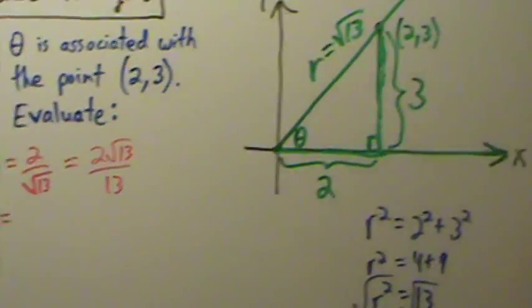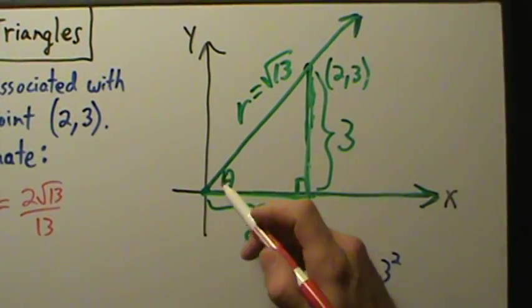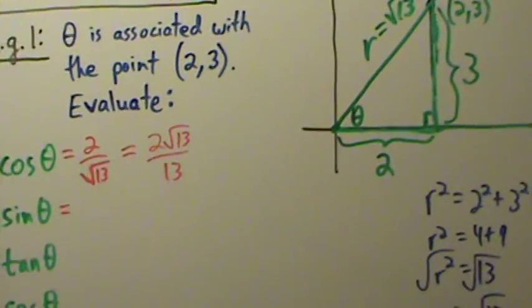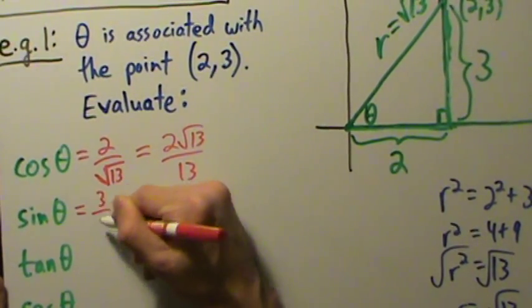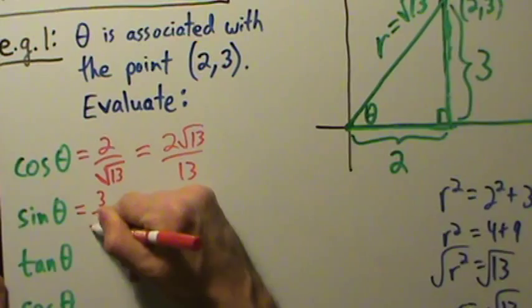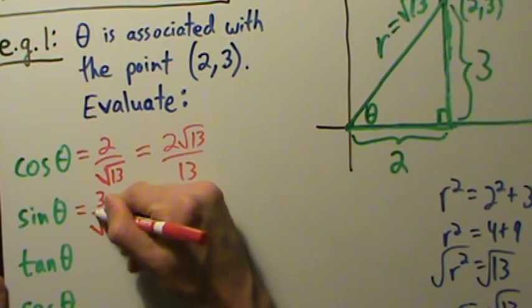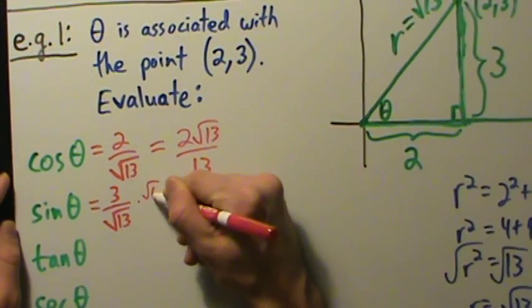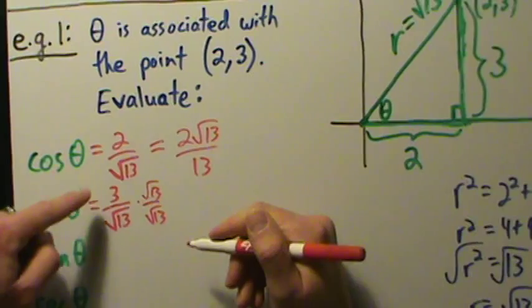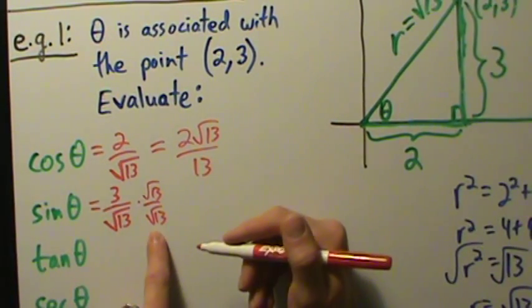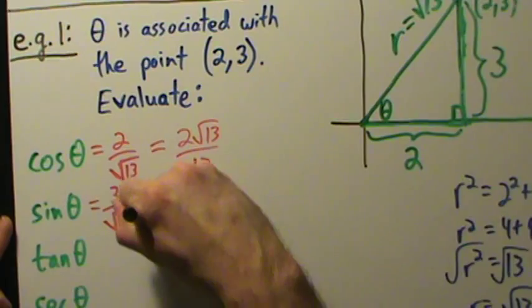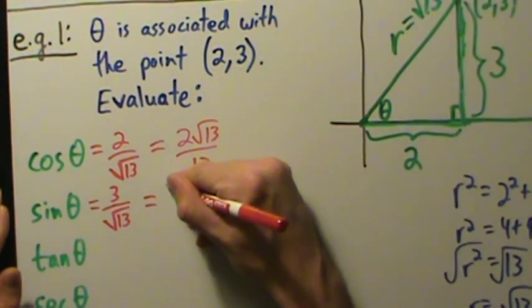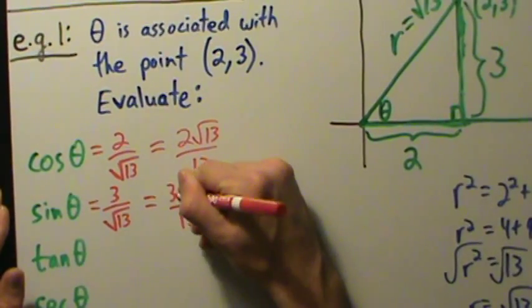Sine of theta is opposite over hypotenuse, so sine of theta equals 3 over √13. If you need to rationalize, multiply by √13 over √13 — you get 3√13 on top, and √13 times √13 gives 13 on the bottom, so the rationalized form is 3√13 over 13.